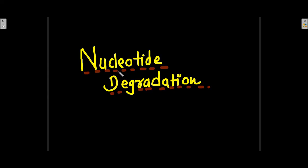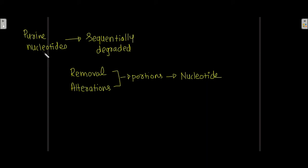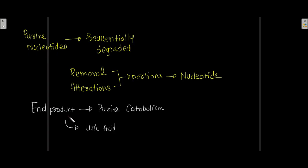Purine nucleotides can be sequentially degraded by removal or alteration of portions of the nucleotide. The end product of purine catabolism in humans is uric acid.